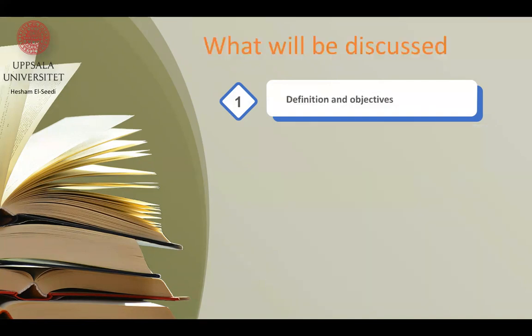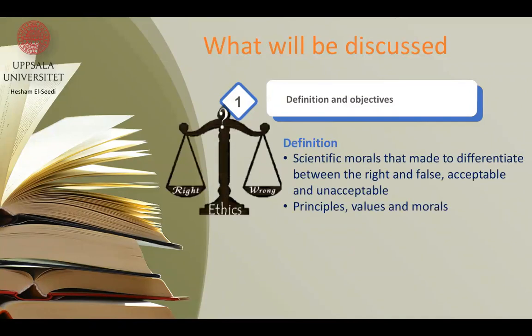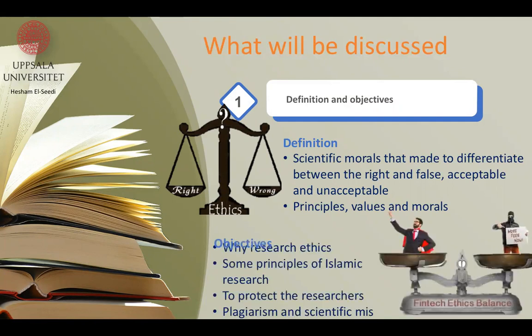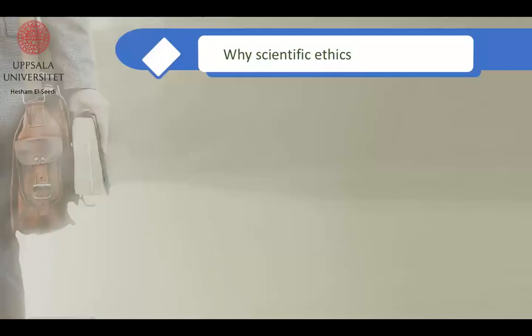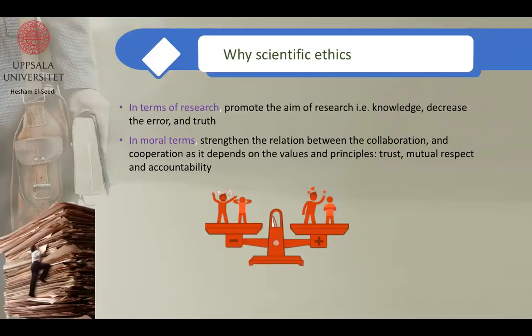Let us start with the definition: it is a scientific moral made to differentiate between the right and false, acceptable and unacceptable principles, values, and morals. The objectives are for researchers to protect them from plagiarism and scientific misconduct, which is a very serious problem if it happens in terms of research.